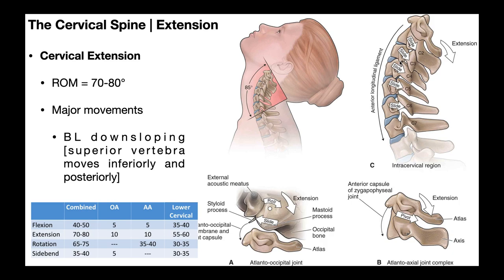What does that do to the intervertebral foramina at each level? The intervertebral foramina are going to narrow — the exact opposite of flexion, where they were wider. In extension, the facet joints are more closed-packed and the intervertebral foramina are narrower, meaning less space for the nerve root. So if an individual has a radiculopathy — a compressed nerve root — they're probably not going to tolerate extension well, because it narrows the intervertebral foramen and may contribute to further compression of that nerve root.